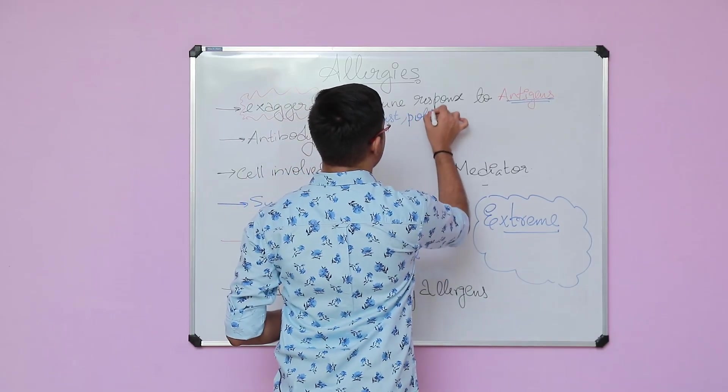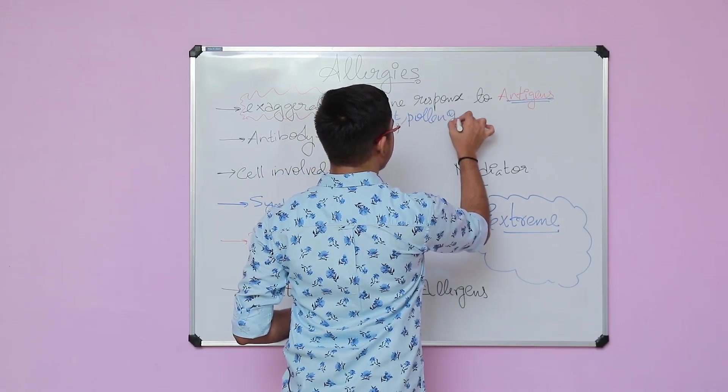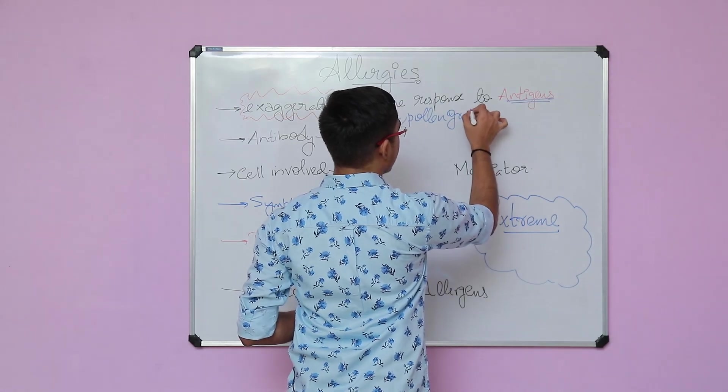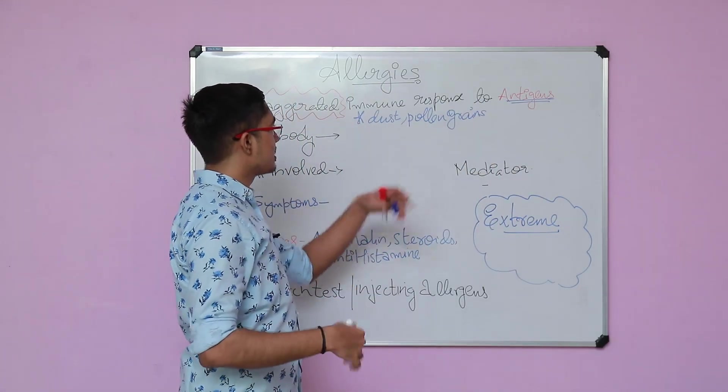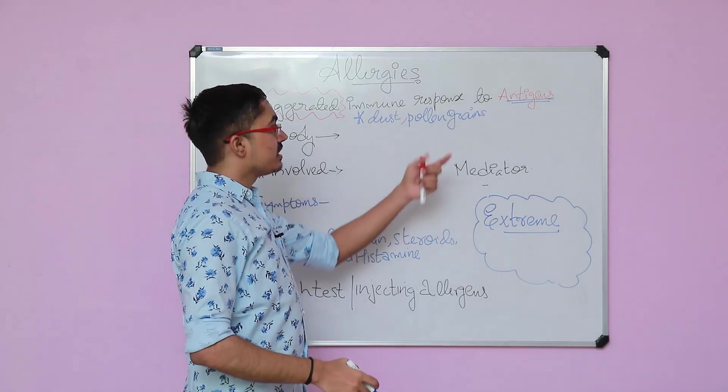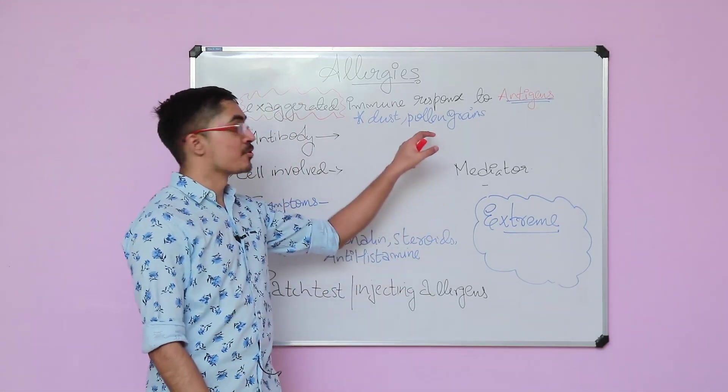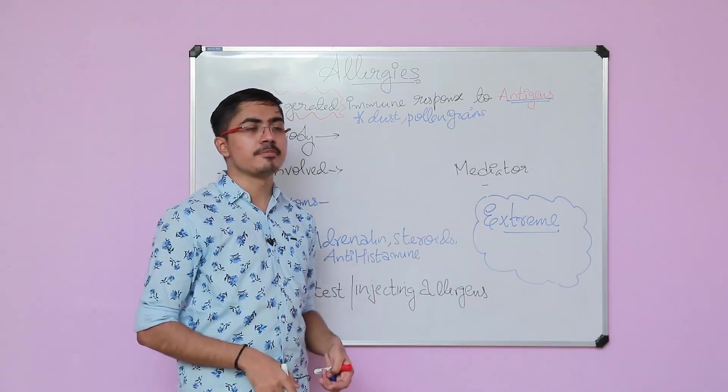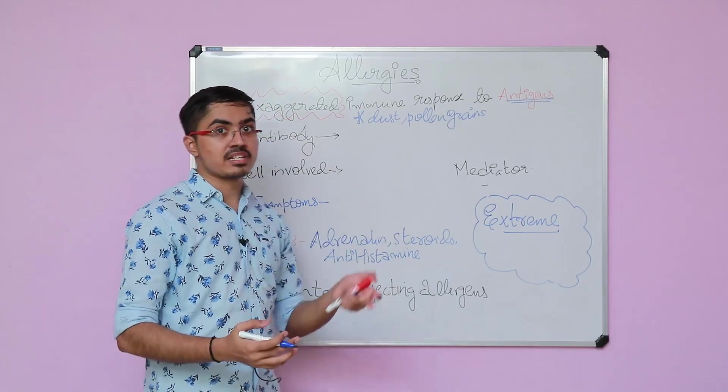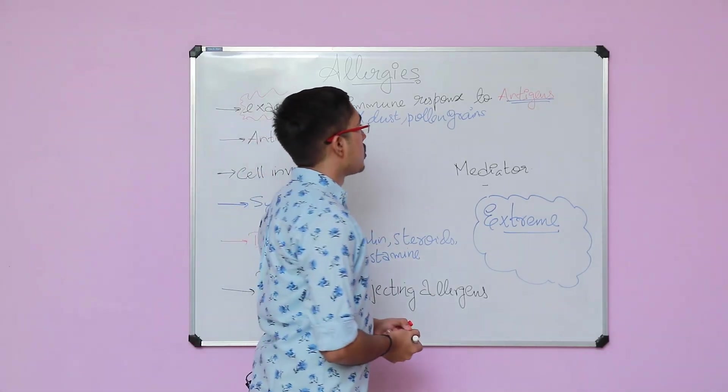Pollen grains, especially if you talk about developed countries like America, where people have very little dust in their homes. But when they take a walk in the garden and are exposed to pollen grains, many people develop exaggerated immune response, that is allergy against pollen grains.